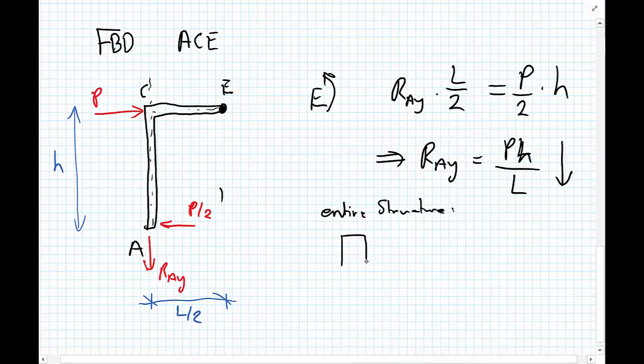If we take the sum of the forces for the entire structure, so you can imagine we have a free body diagram with RAY and RBY, we can see from the sum of the forces in the Y direction that RBY is also equal to P H upon L, but now in an upwards direction.